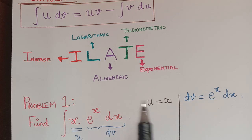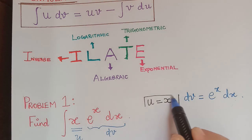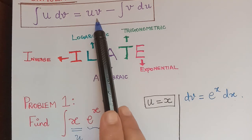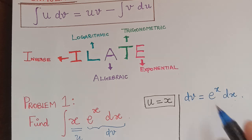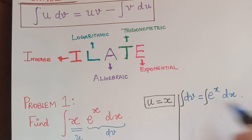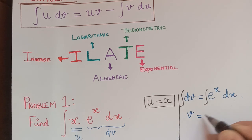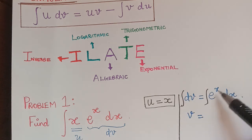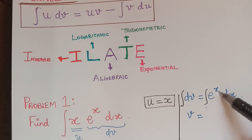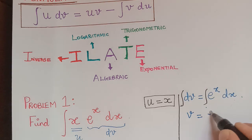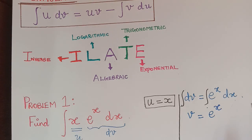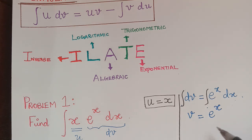Now in the formula we need u, v, and du. We have u = x. Next, v is the integral of dv. Integrating dv = eˣ dx, we get v = eˣ. By the integration formula, the integral of eˣ is eˣ. We will add the constant of integration at the end, so v = eˣ.